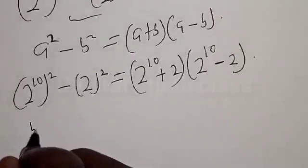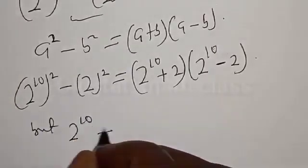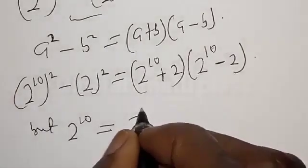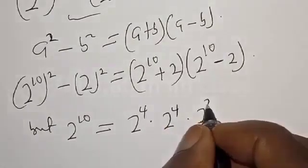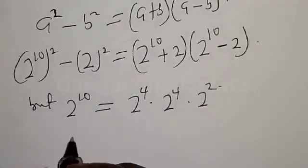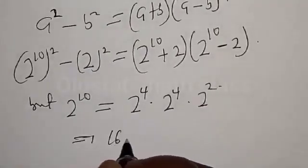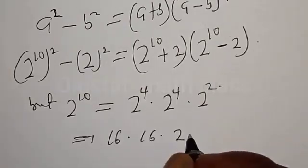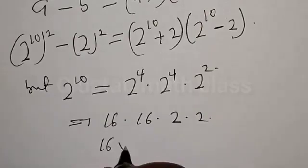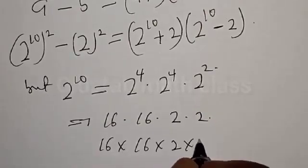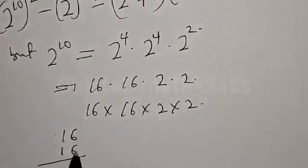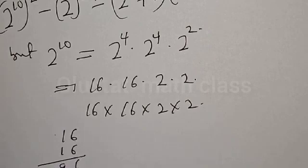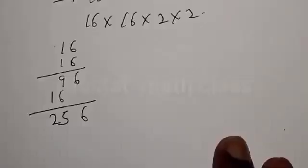Now, 2 raised to power 10 can be expressed as 2 raised to the power of 4, multiplied by 2 raised to the power of 4, multiplied by 2 squared. Then 2 raised to the power of 4 is 16, which gives us 16 multiplied by 16 multiplied by 2 multiplied by 2. Let's compute 16 times 16: 6 times 6 is 36, carry 3; 6 times 1 is 6 plus 3 is 9; 1 times 6 is 6; 1 times 1 is 1. So 16 times 16 is 256.